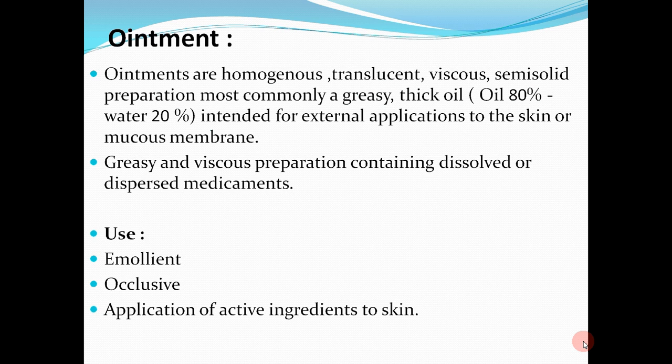The uses of ointment: first, emollient — meaning it softens the skin after application. Second, occlusive — meaning it forms an impermeable film or substance that covers the skin directly or indirectly; examples include transdermal patches, devices, tape, or wound dressings. Third, application of the active ingredient to the skin.